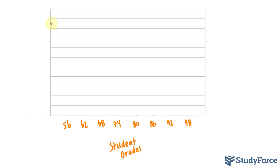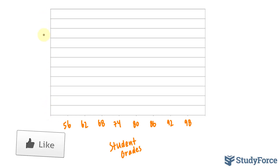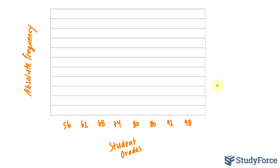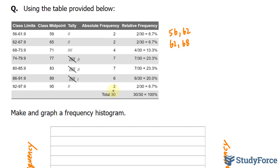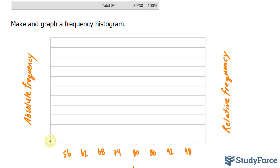Along the vertical axis, we can place both the absolute frequency and the relative frequency. I'll dedicate the left side to the absolute frequency and the right side to the relative frequency. Looking at the absolute frequency values, they range from 2 all the way to 7, so we'll mark the left axis at 2, 4, 6, and 8.